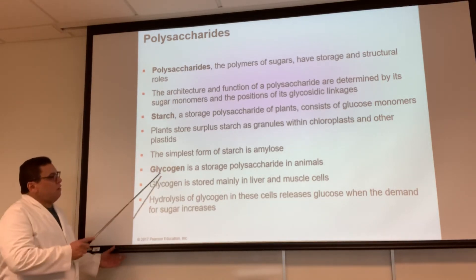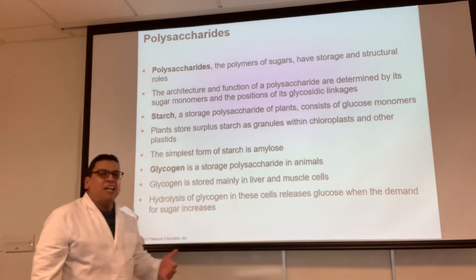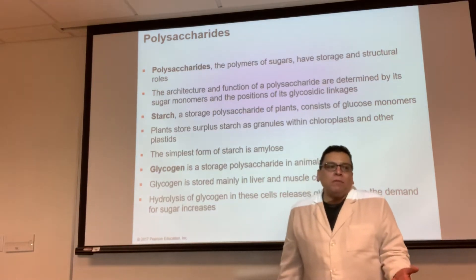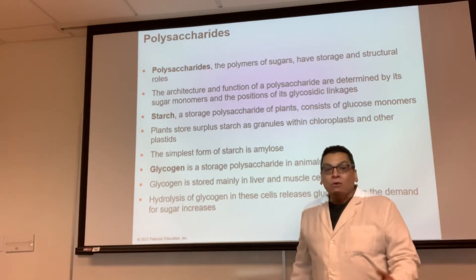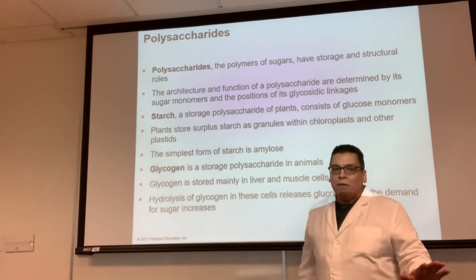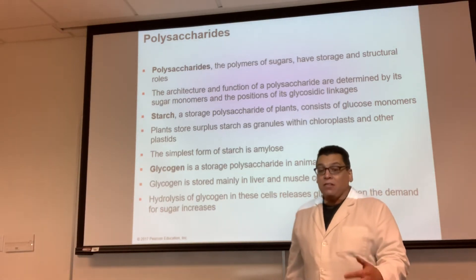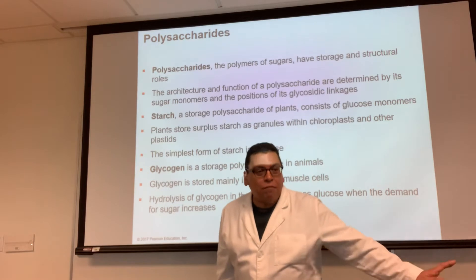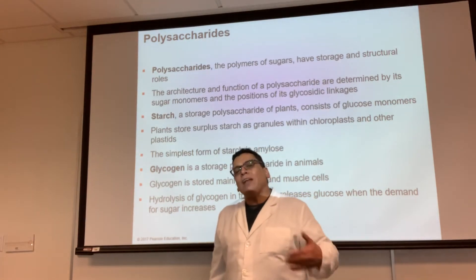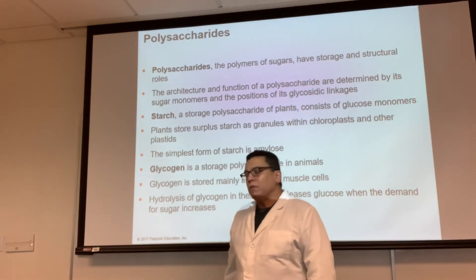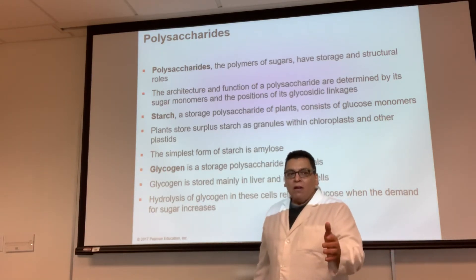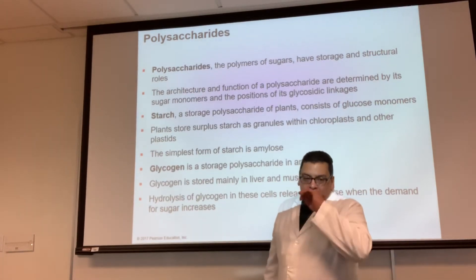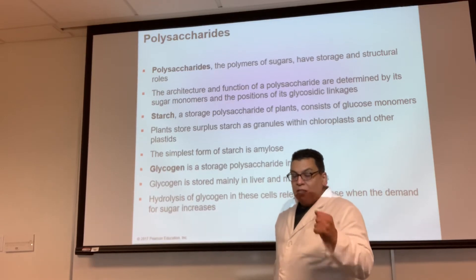We also store glucose in the form of glycogen, in our liver and in our muscles. Your body is not going to simply get rid of glucose because it uses it to make energy — ATP. So it saves it: when you get hungry, it pulls it out and uses it for you. In between meals, or especially if you haven't eaten for a while, glycogen is what keeps you alive.